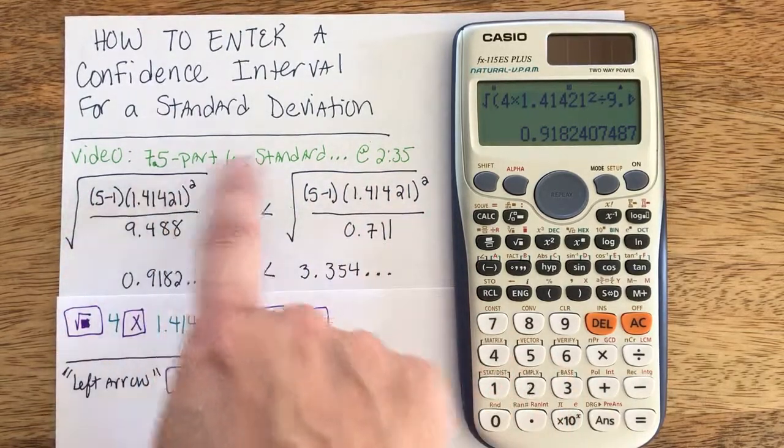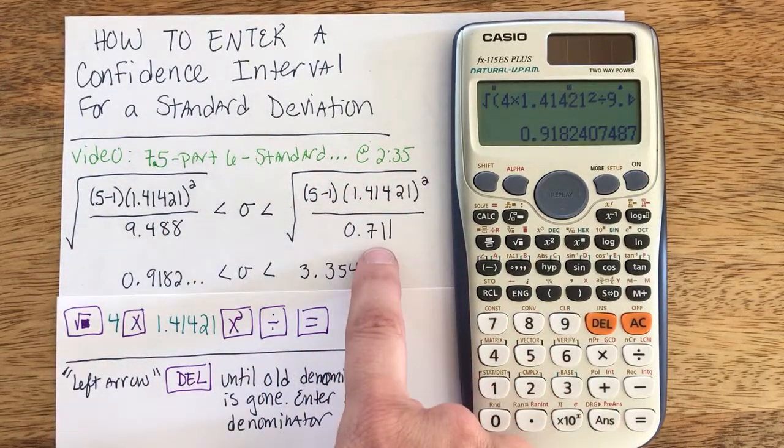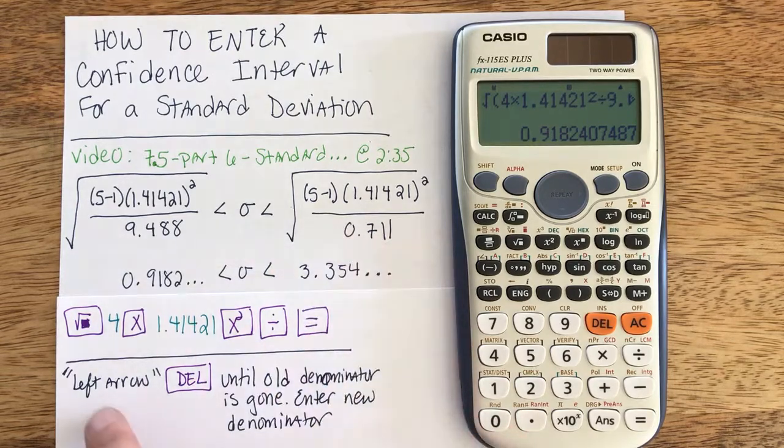Because the upper bound has an identical numerator inside of a square root, and the only piece that changes is the denominator.